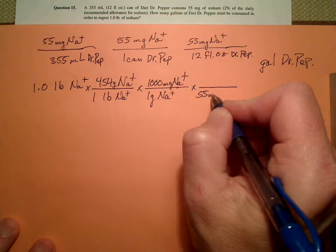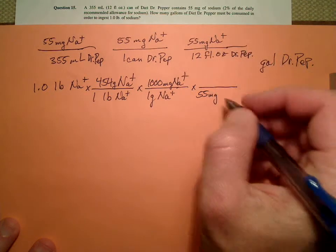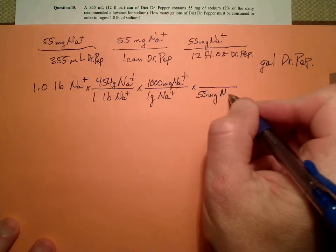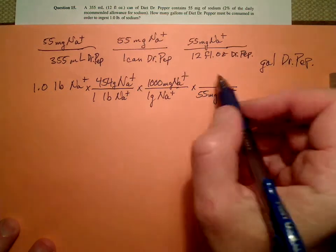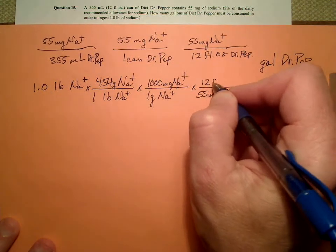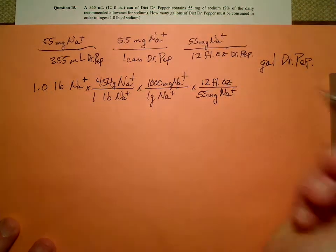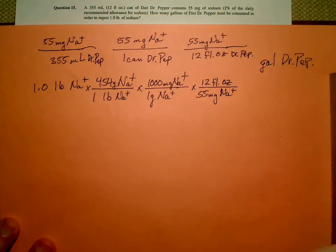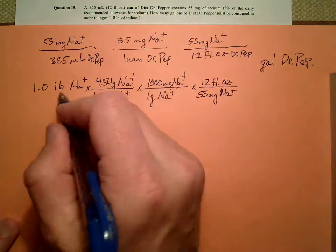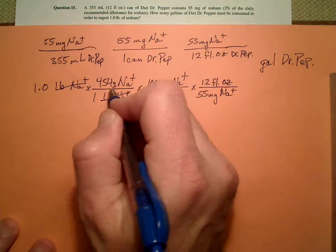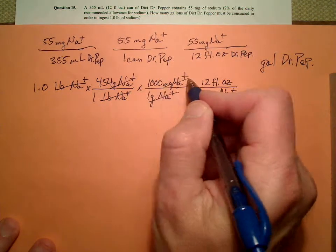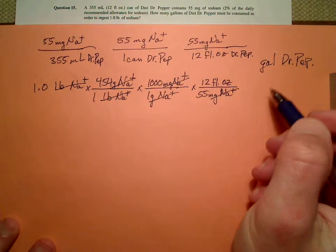So, 55 milligrams—remember I can flip this around however I need it—of sodium is 12 fluid ounces. All right. So now let's check where I stand. Pounds of sodium, pounds of sodium, grams of sodium, grams of sodium, milligrams, milligrams, fluid ounces.